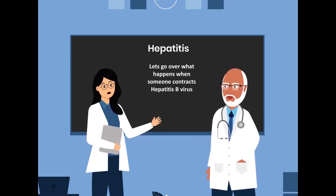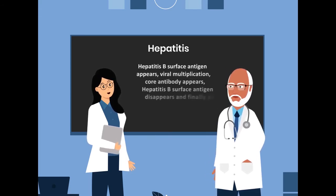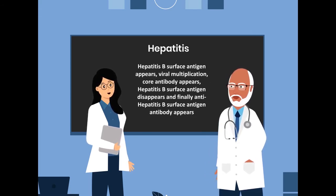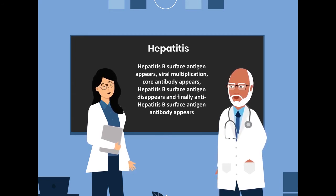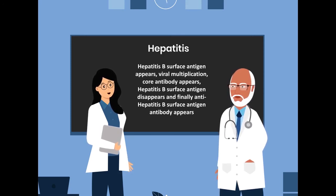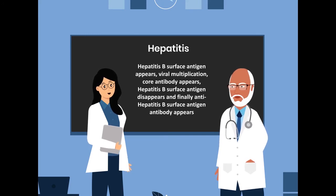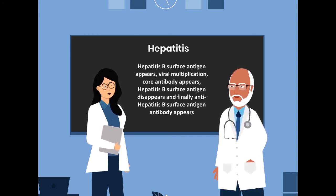Let's go over what happens when someone contracts Hepatitis B virus. First, Hepatitis B surface antigen appears. Then viral multiplication occurs. Next, core antibody appears. Then Hepatitis B surface antigen disappears. And finally, anti-Hepatitis B surface antigen antibody appears.